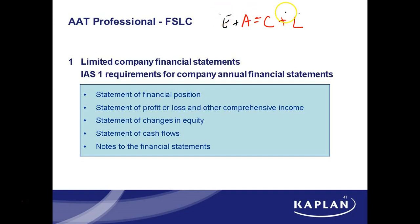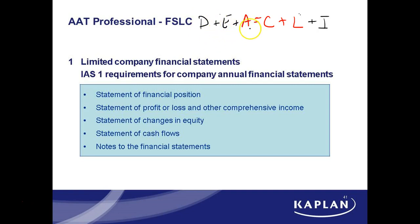So buying on credit: debit purchases, credit trade payables. Then you sell it — however you sell it, either you credit revenue and then debit money or debit receivable. And then the last thing is that the owner would take something for himself from time to time from the bank. So credit A and debit D. And so we know the whole dead CLIC. Whenever anything on this side goes up, we debit it, and on this side goes up, we credit.